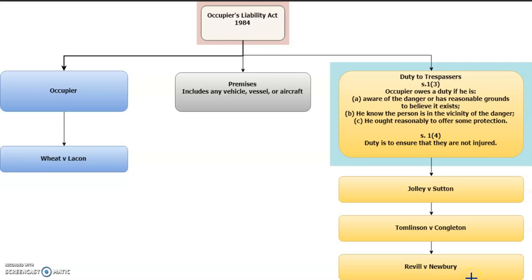Another useful case is Revill v Newbury — a classic and rather controversial case — which gives us the principle that protection is afforded even to those who are breaking into premises with criminal intent. William Newbury was sleeping in a shed on his allotment to protect his property at night, suspecting a break-in, and he fired a 12-bore shotgun through a hole in the shed door, shooting the claimant. The claimant was a trespasser and sued under the 1984 Act. The principle established is that under section 1, an occupier cannot treat a trespasser as an outlaw and still owes a duty that the trespasser does not suffer injury on the premises.